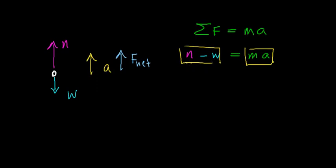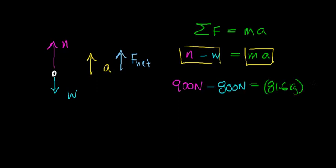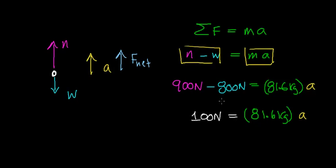We know what the normal force is — it's what the scale reads when their feet leave the ground, which is 900 newtons. Their weight is 800 newtons acting in the downward direction. So: 900 newtons minus 800 newtons equals 81.6 kilograms times the acceleration. Simplifying, 100 newtons equals 81.6 kilograms times acceleration. This 100 newtons represents how much net force is required to cause this person with a mass of 81.6 kilograms to accelerate.